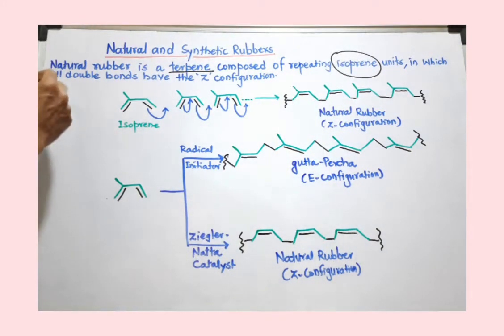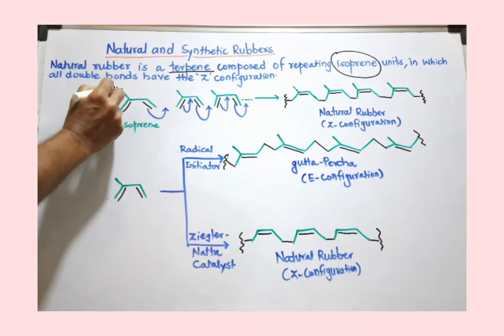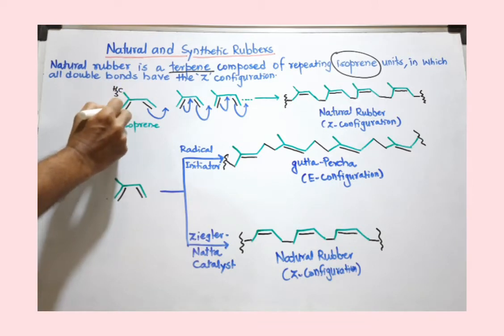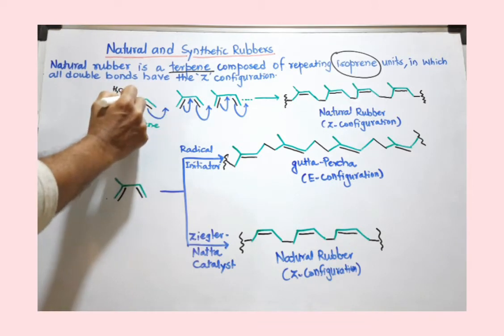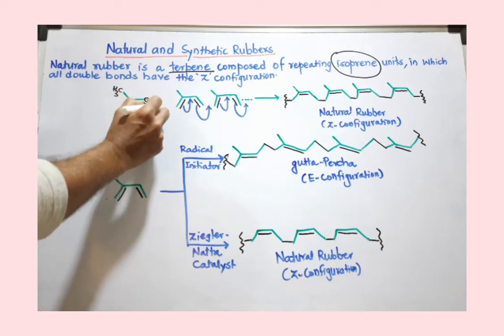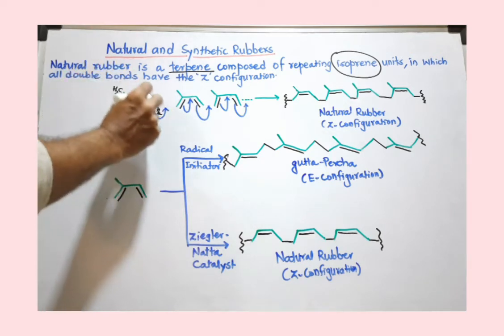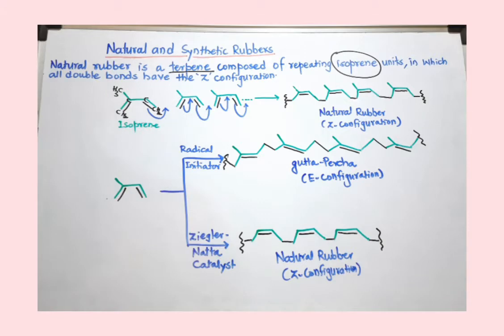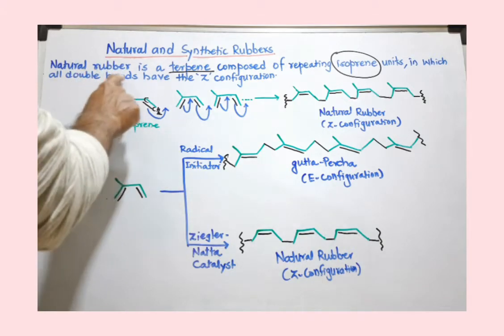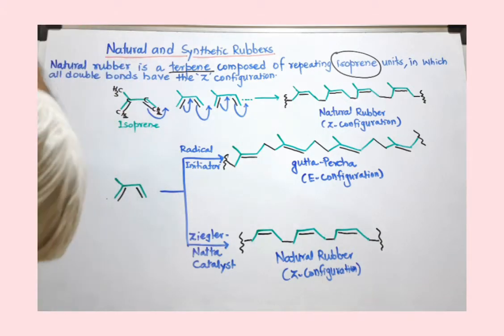What is the isoprene unit? The isoprene unit is: CH3, CH2, C, C, and CH2. This unit is called the isoprene unit, and in natural rubber this unit is repeated n times.